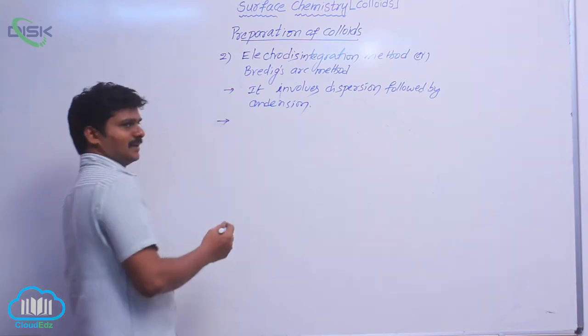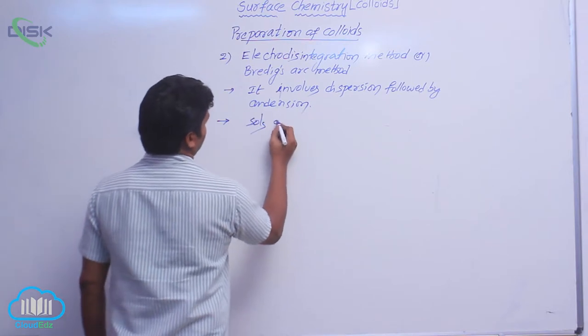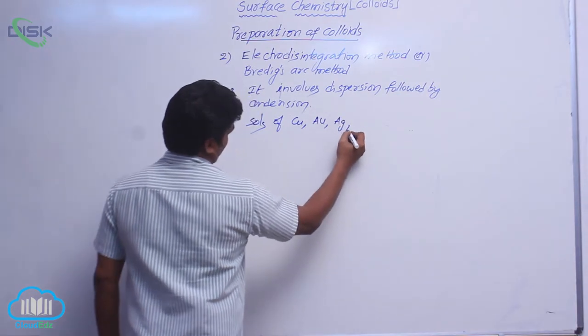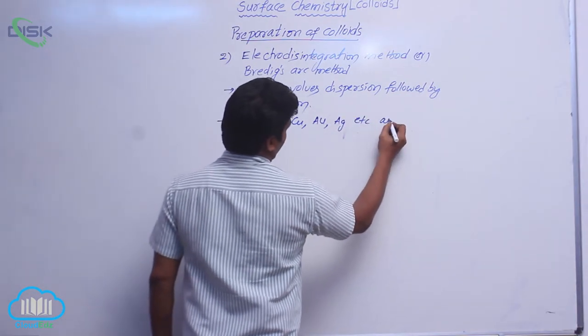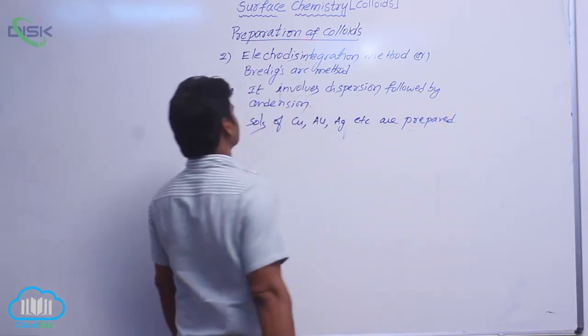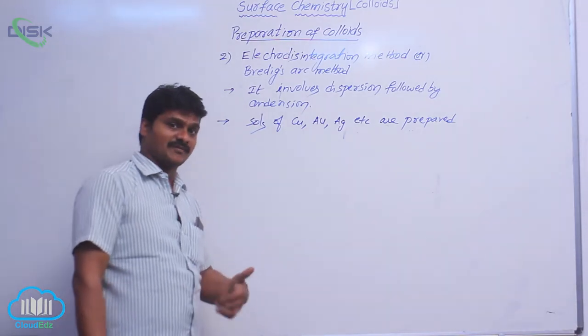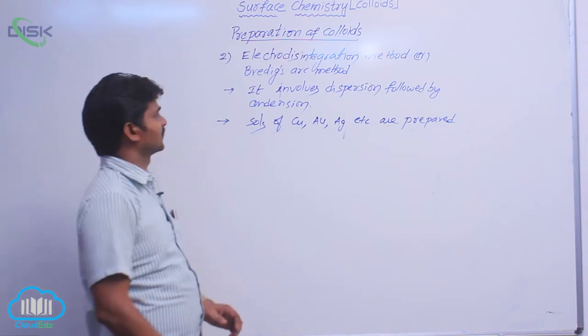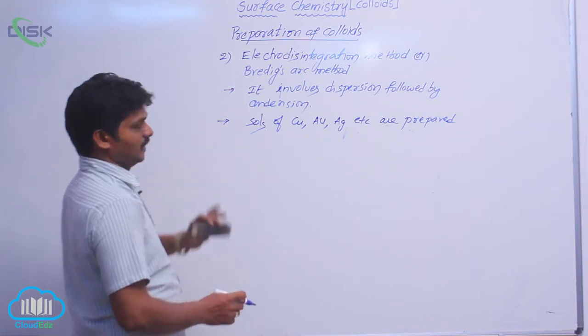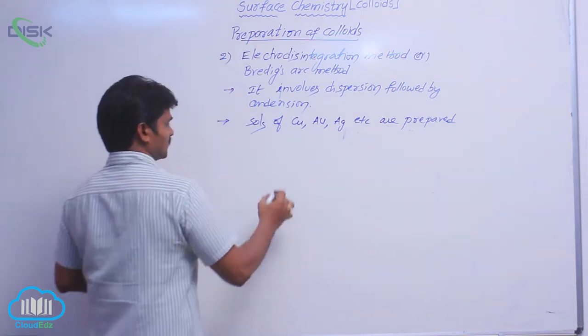In this Bradick's arc method, metal salts like gold, copper, silver, platinum, etc. are prepared. These salts are prepared by Bradick's arc method. Gold salt is prepared by which method? Bradick's arc method. See the diagram for the preparation of this gold salt or any copper, silver, gold salt.